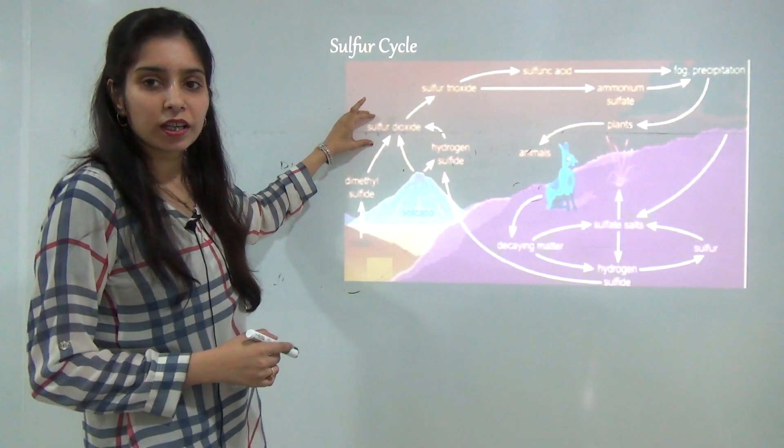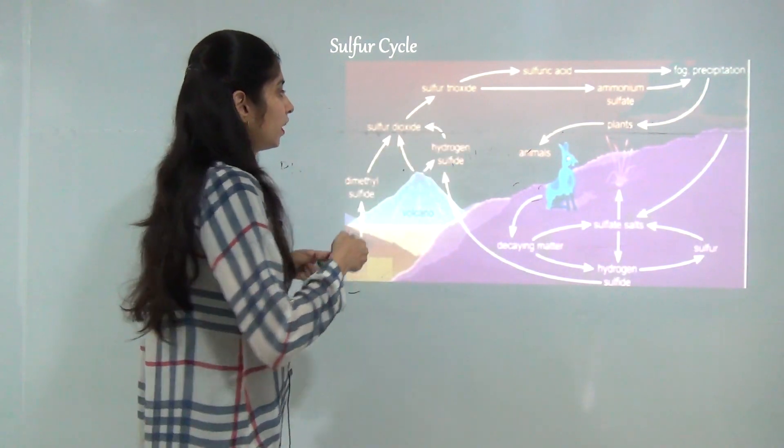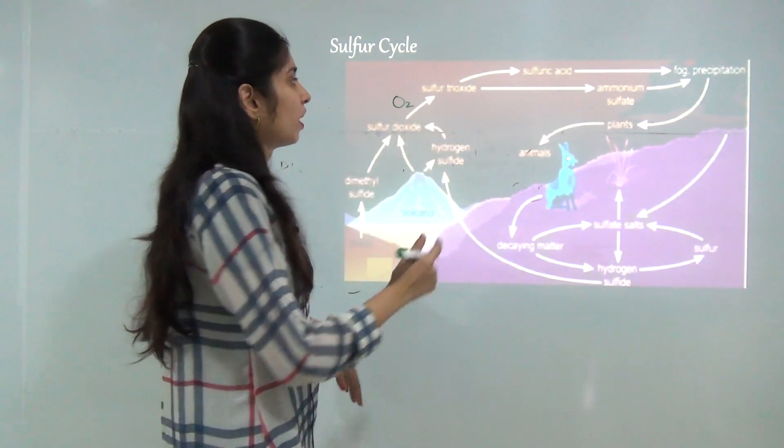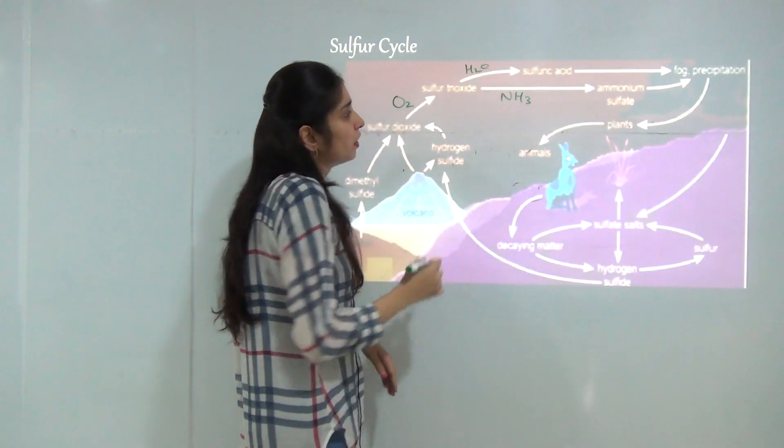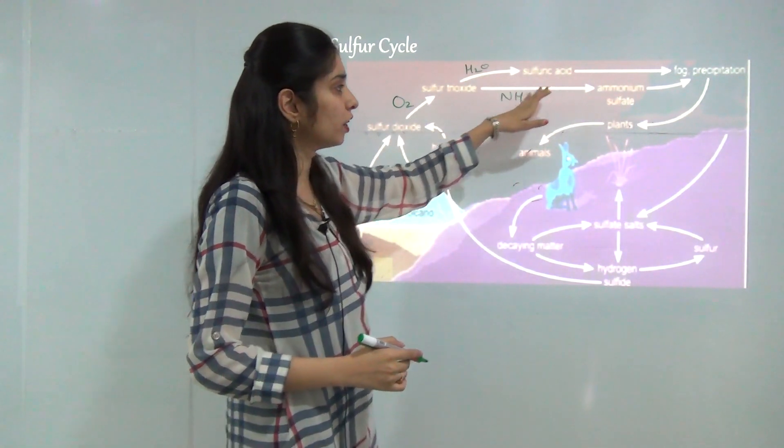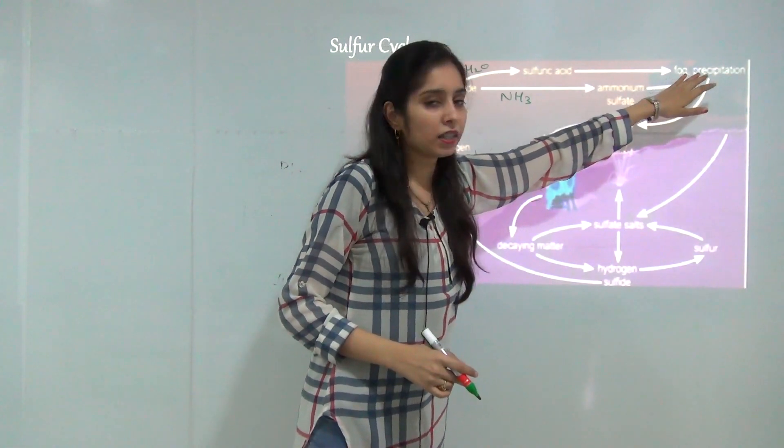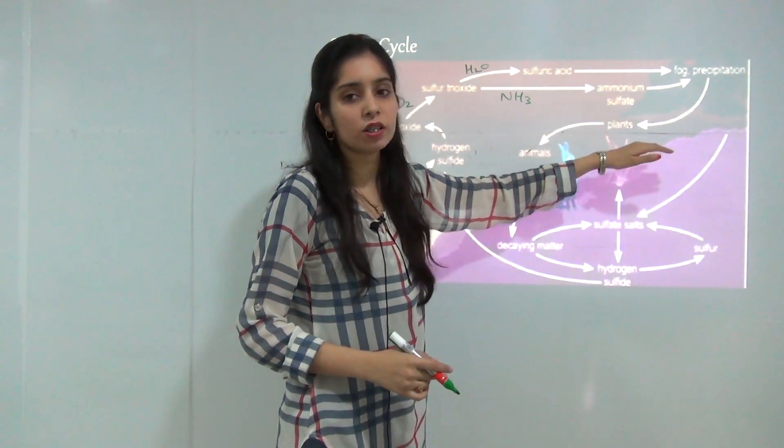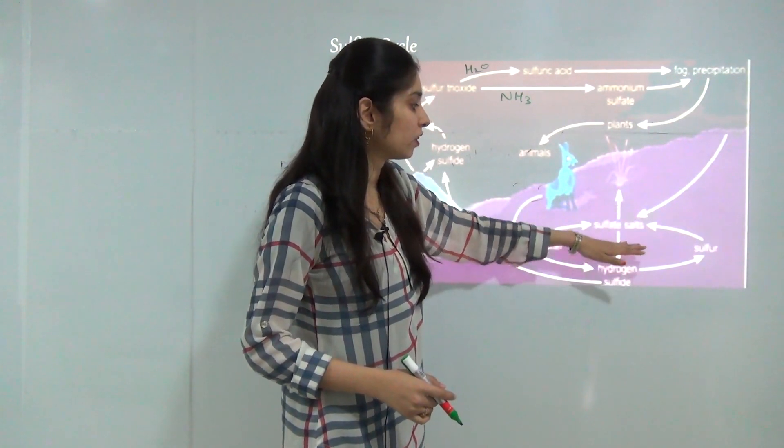Then the sulfur dioxide when reacts with oxygen it makes sulfur trioxide. It reacts with oxygen molecules and makes sulfur trioxide, then this sulfur trioxide can react with water or it can react with ammonia. When it reacts with water it makes sulfuric acid and when sulfur trioxide reacts with ammonia it converts into ammonium sulfate. All these factors are responsible for the acid rain. They make acid deposition to the earth by the rain, and these sulfate salts come to the earth and are consumed by the plants and they are made into the soil as the sulfate salts.